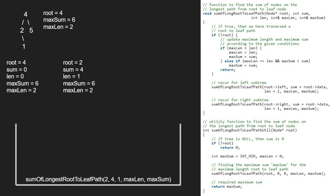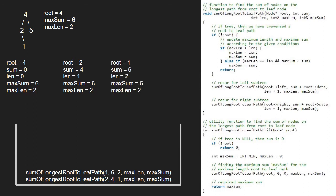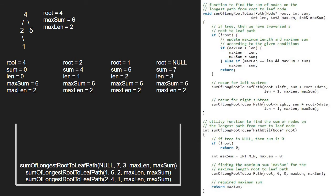Now we pass the right child of 2, which is 1, so root will point to 1. Again, as root is not null, we pass the left child of 1, which is null, so root will point to null. As root points to null, the if condition gets satisfied and we check if max_len is less than len. As it is true, we set max_len to len and max_sum to sum. Then we return to the previous call.